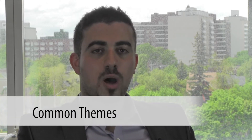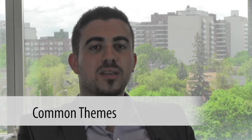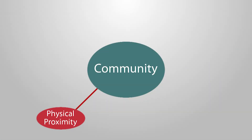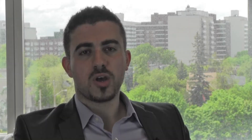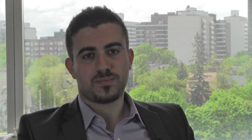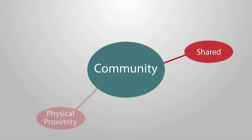We identified 10 common themes and 3 uncommon themes in the reviewed definitions of community. The most common theme was physical proximity — it refers to geography or location. For instance, neighbors belong to the same community because they live in the same neighborhood. Shared was the second most common theme; it refers to anything that members of a community have in common, such as shared interests, goals, perspectives, or any other attributes.